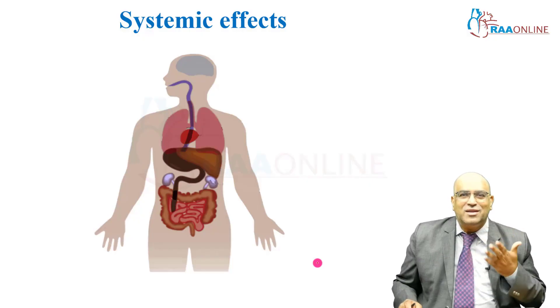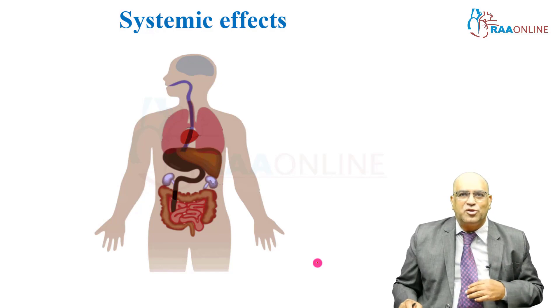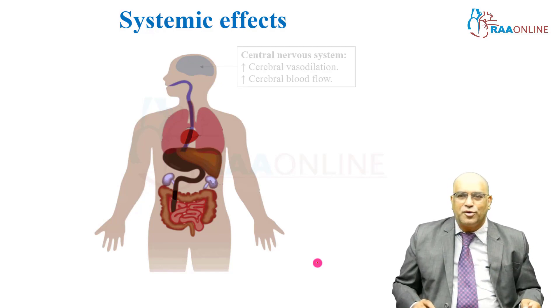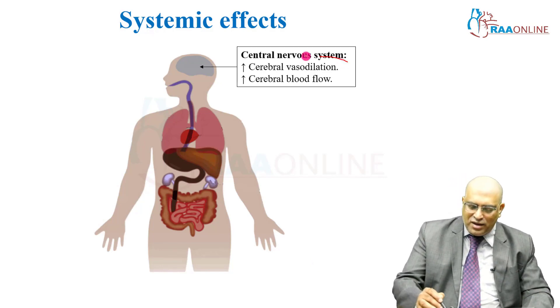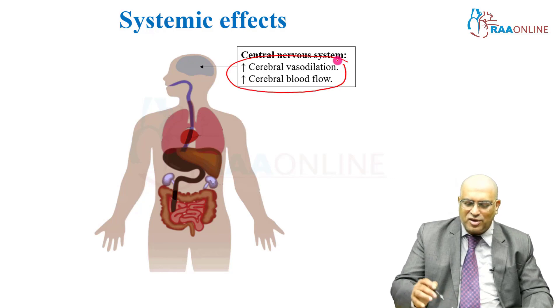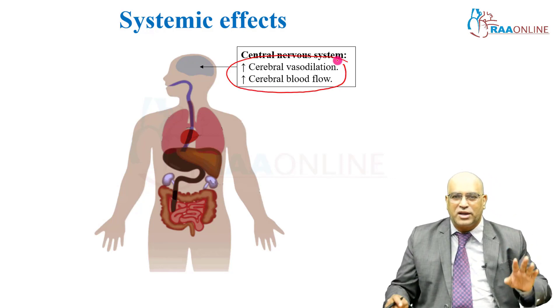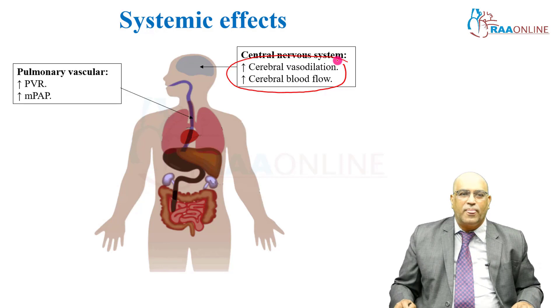Coming to the systemic effects of hypercarbia which you can see in the operating room, there can be increased cerebral vasodilatation and increased cerebral blood flow in the case of the central nervous system.